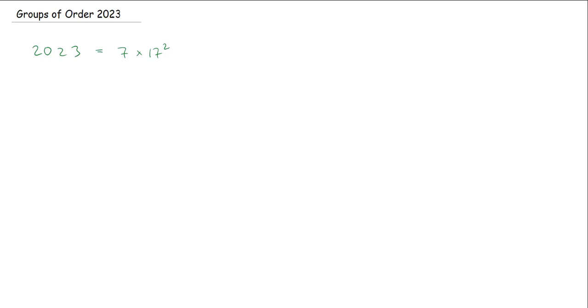Well, let's then ask, since we know the prime factorization, how many different Sylow subgroups we have corresponding to the different primes. Now, I always start with the largest primes. So let's see. Let's look at P equals 17. And I want to know, what is N_17?